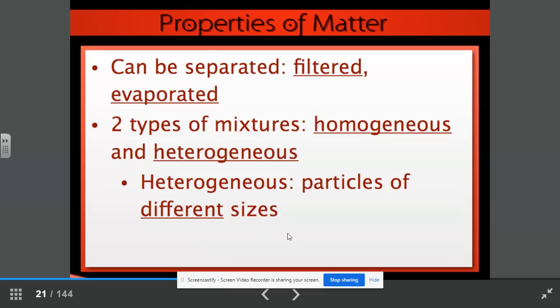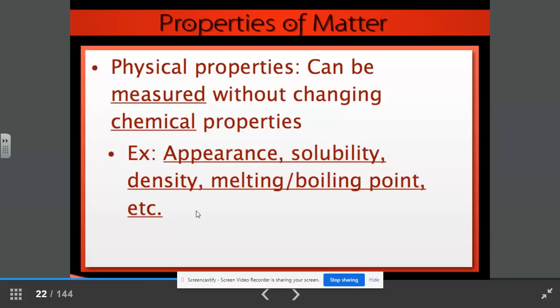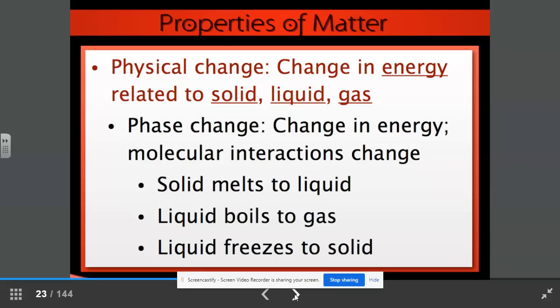Physical properties can be measured without changing chemical properties. Some examples of physical properties are appearance, solubility, density, melting point, boiling point, and so on. A physical change is the change in energy related to either being a solid, liquid, or gas. A phase change is the change in energy. Molecular interactions can change. For example, a solid can melt to become a liquid. A liquid can boil to become a gas. And liquids can freeze to become a solid.